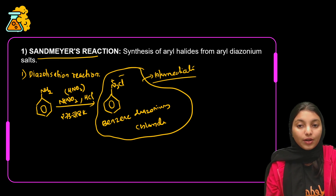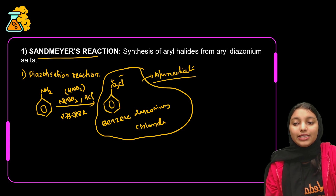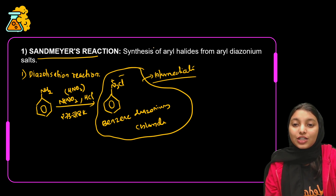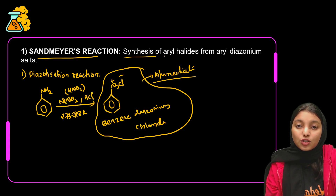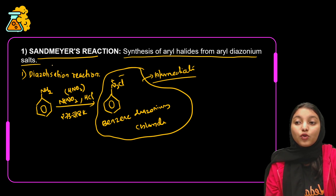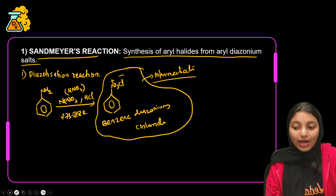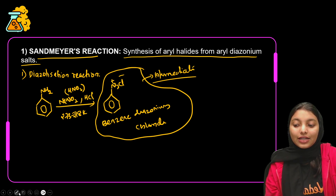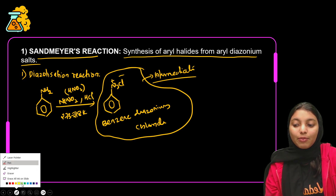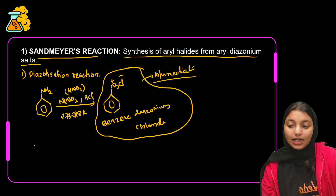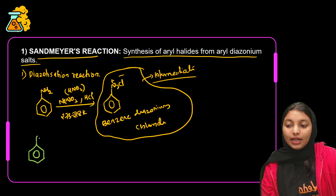Benzene diazonium chloride is very important. This compound is acting as an intermediate starting material for a lot of organic molecules. So this reaction we call it the synthesis of aryl halides from aryl diazonium salt. In the next step, we treat benzene diazonium chloride further.